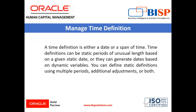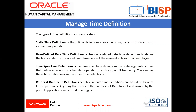You can define static definitions using multiple periods, additional adjustments, or both. The types of time definition you can create are: static time definition, user defined date time definition, time span time definition, and retrieval date time definition.